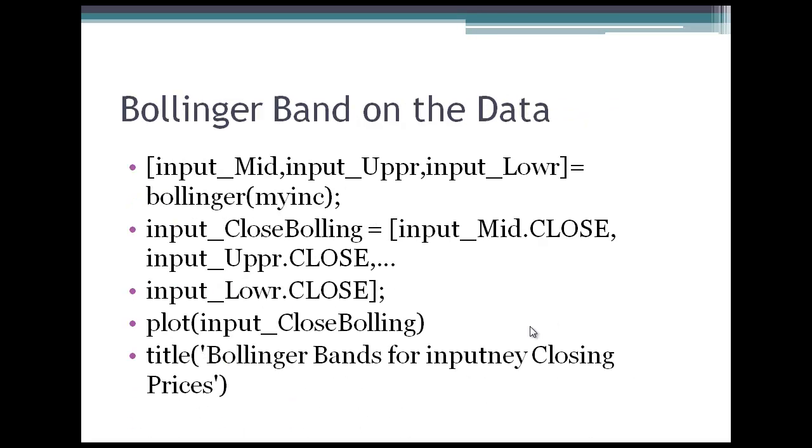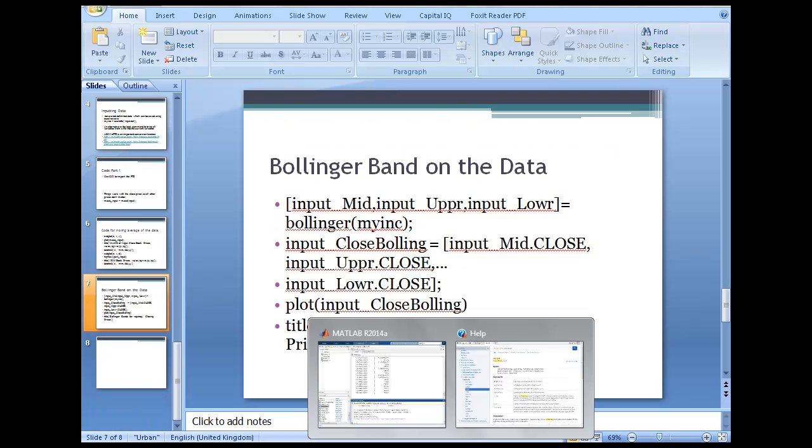Same with Bollinger band—you have a bollinger, and this myinc in the bracket is again a financial time series object. You will get the output which will have date and the values, the upper and the lower limit. And again, that would be a financial time series object, so that would make your life easy.